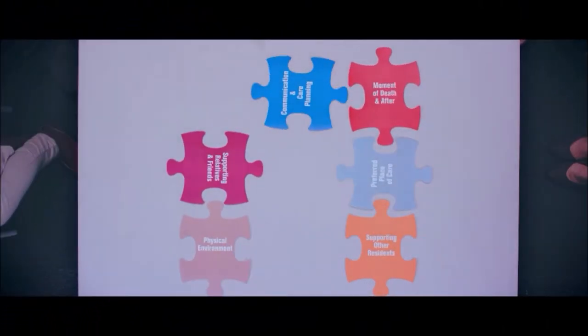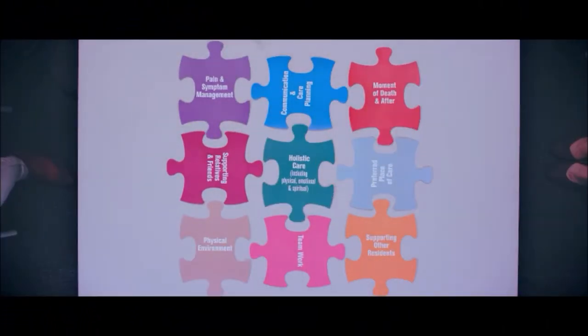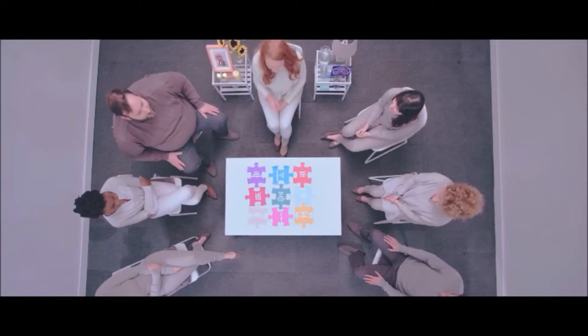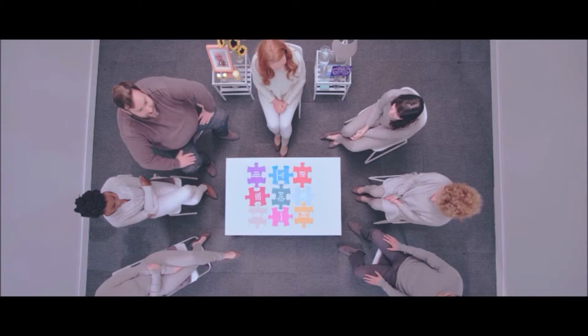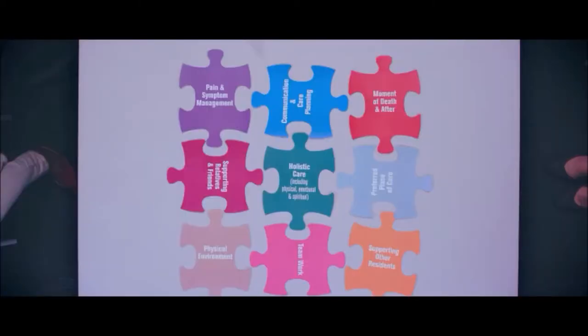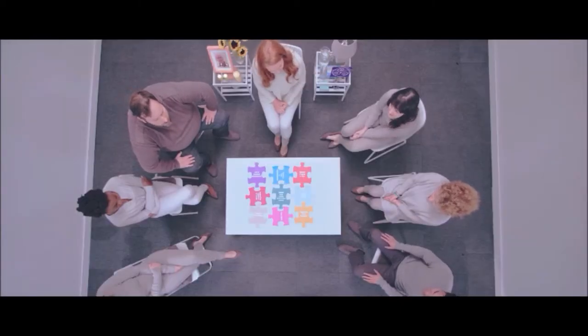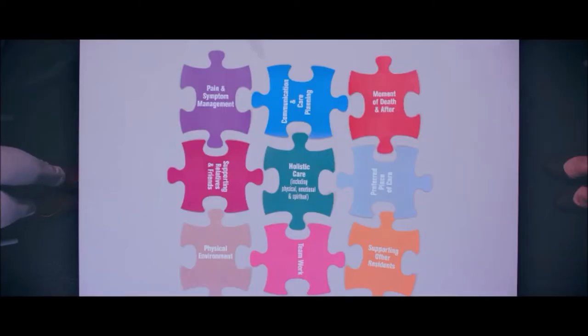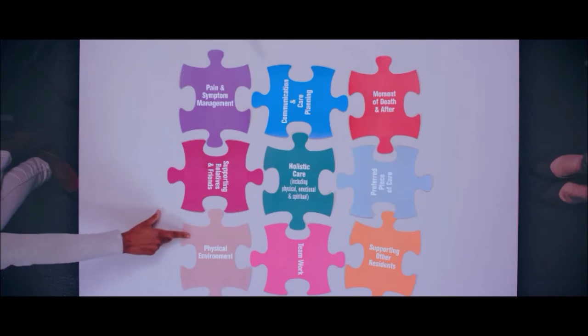The next part of the review uses the jigsaw pieces. These jigsaw pieces create a framework for reviewing Frank's end-of-life care and cover everything from symptom management to teamwork to holistic care. They are an important part of the CEOL review. They help keep the review focused and avoid it slipping into casual chat, and help ensure that all aspects of Frank's care are covered so that nothing important is missed. The majority of a CEOL review is discussion guided by these jigsaw pieces — your job is simply to keep that discussion flowing.